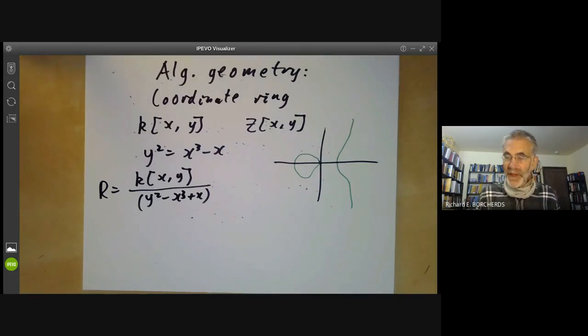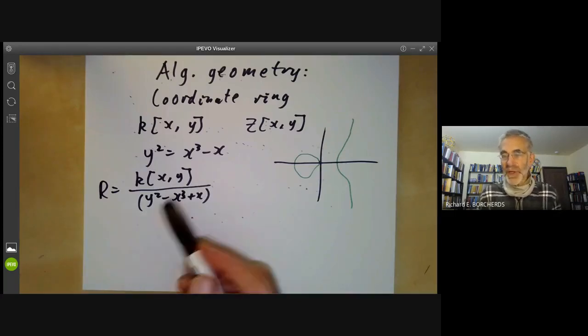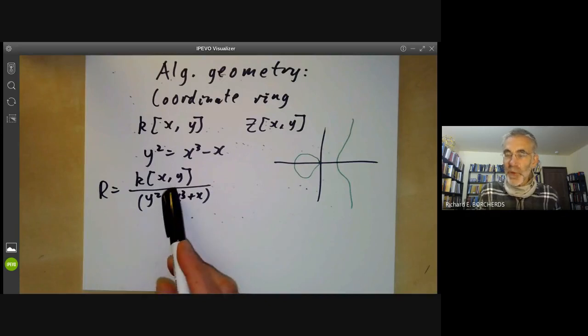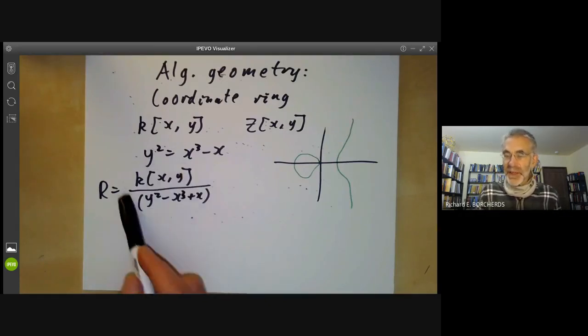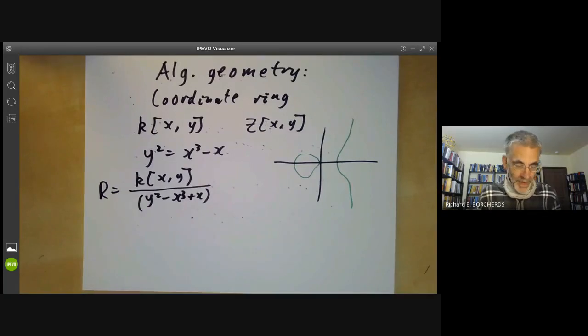You can ask various questions about this. For instance, you could be very lazy and just ask the same question we had last time: Does this ring have unique factorization? In fact, this ring doesn't because it has something called a Picard variety, which is quite big.